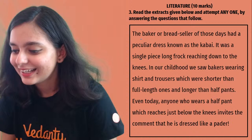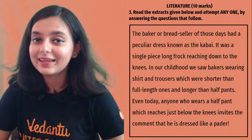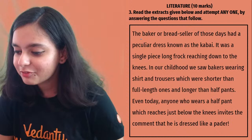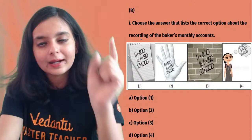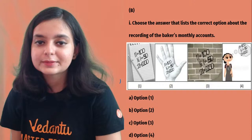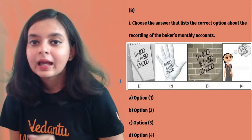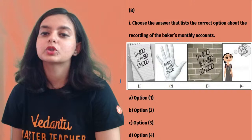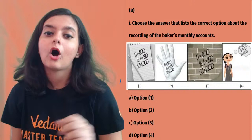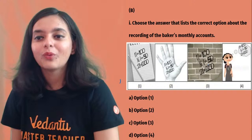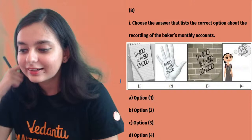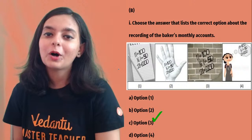You all have to participate in the discussion. Baker from Goa — very good, amazing! The question is about how the baker recorded his monthly accounts. The options are: notebook, palms of your hand, wall, or in mind. Option number three — wall — is absolutely correct. The baker used to record his monthly account on the wall.